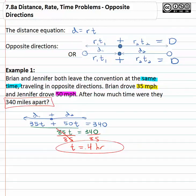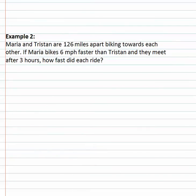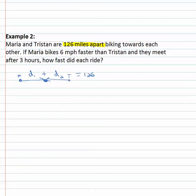These might feel tricky to set up, so let's try another example. Maria and Tristan are a hundred twenty-six miles apart, biking towards each other. Adding Maria's distance and Tristan's distance together is going to equal one hundred twenty-six miles.